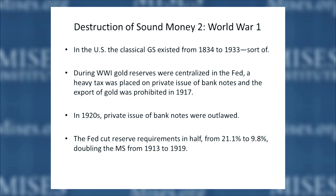During World War I, the Fed cut reserve requirements in half — banks no longer had to hold around 20% against their deposits and notes; they could now hold around 10% or even less. As a result, the money supply doubled from 1913 to 1919, causing huge inflation. The Fed in 1919-1920 began to restrain the increase in the money supply, and that's when we got the depression of 1920-21, which ended very quickly because the government did not intervene. The central bank did not try to re-inflate the money supply until 1922, when it was already over.